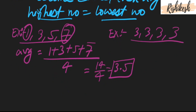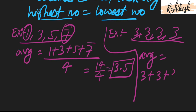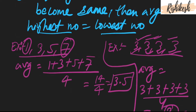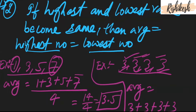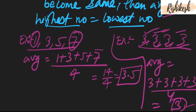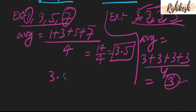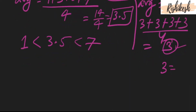Now let's look at the second example. In this case, all numbers are the same — 3, 3, 3, 3. Highest and lowest values are the same. The average is 3 + 3 + 3 + 3 divided by 4, which comes out to be 3. So the average is 3, which is equal to both the highest and the lowest number. This proves the second property.